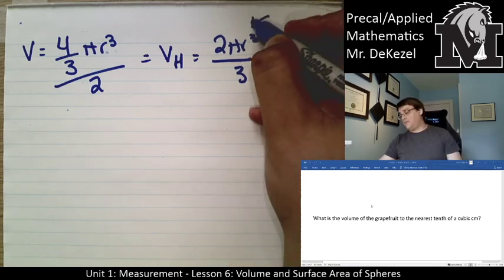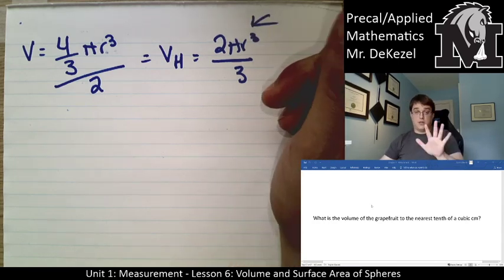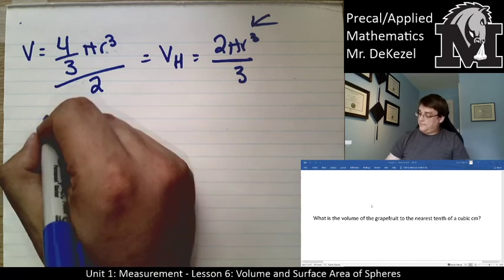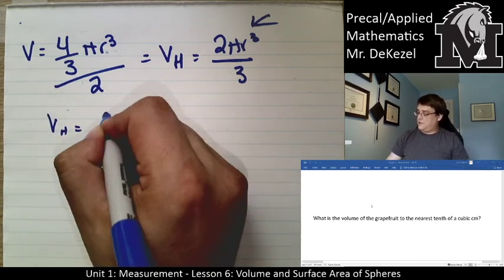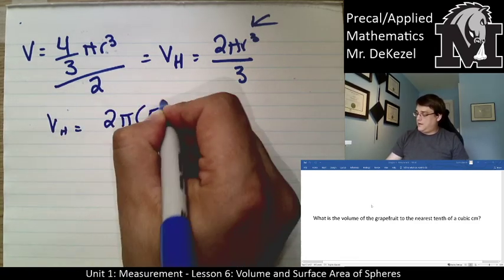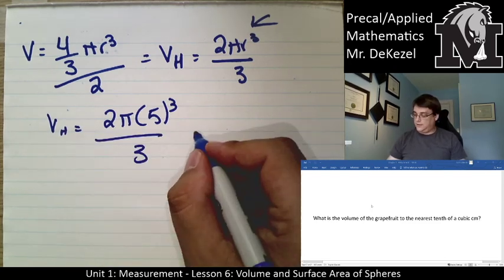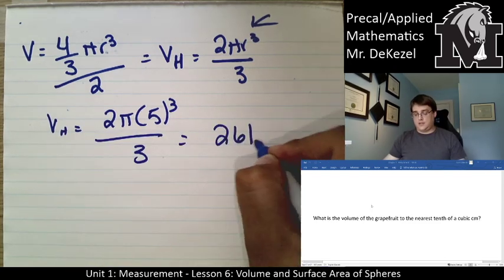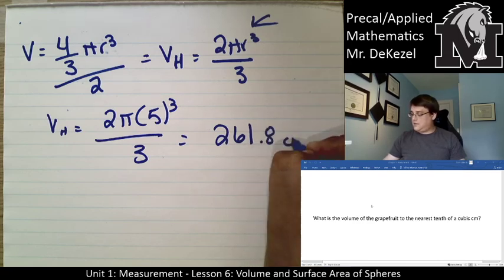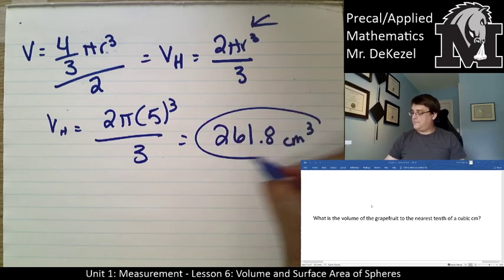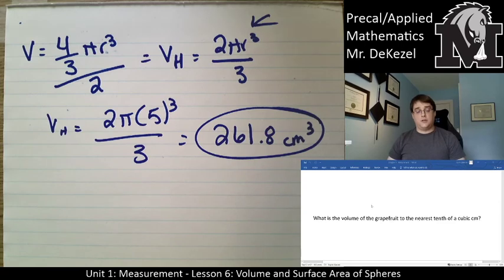Again, all you need to know is the radius, which we do, it's 5. So we can do that. The volume of the hemisphere here is 2 times π times 5 cubed, all divided by 3, which is 261.8 centimeters cubed. Boom, we did it.